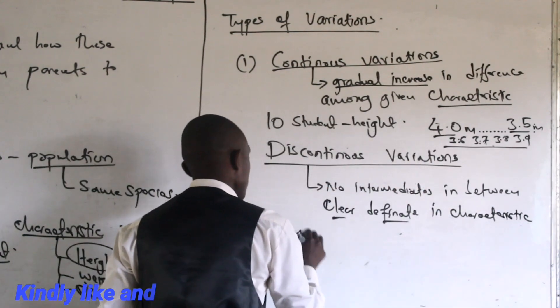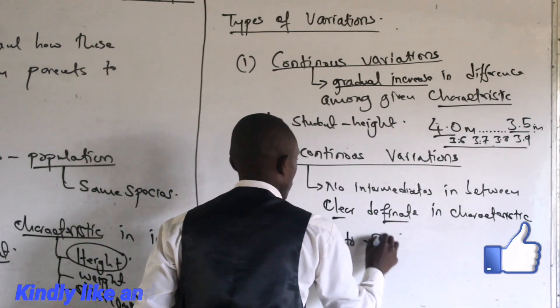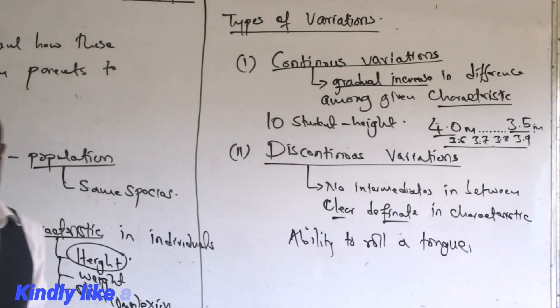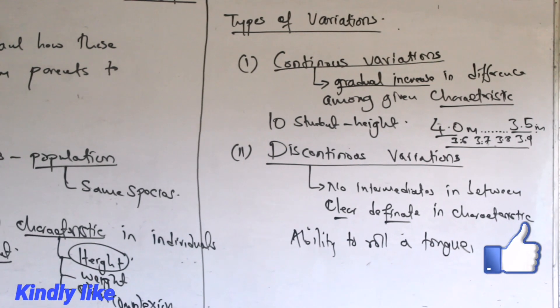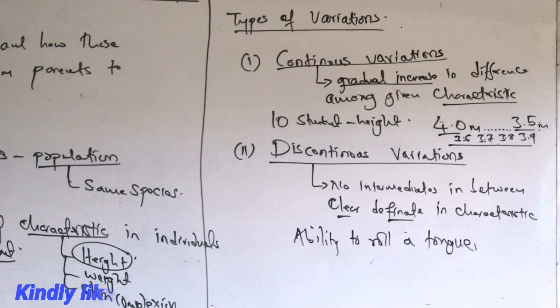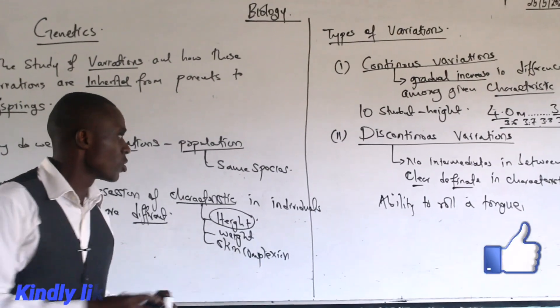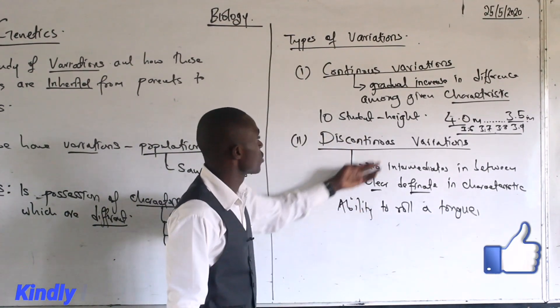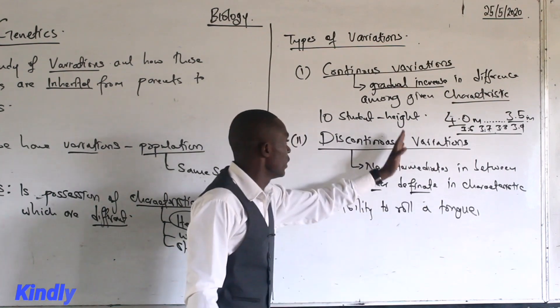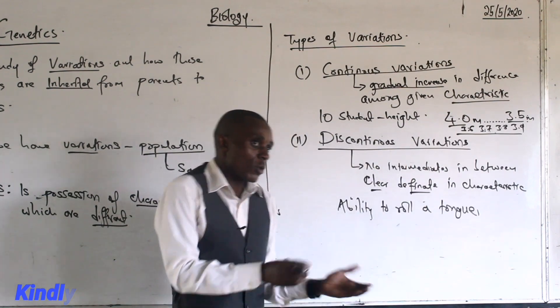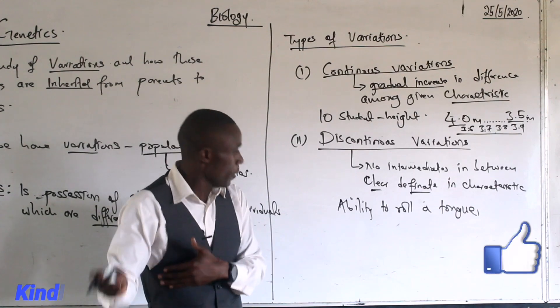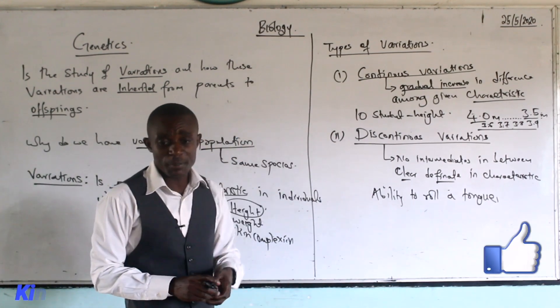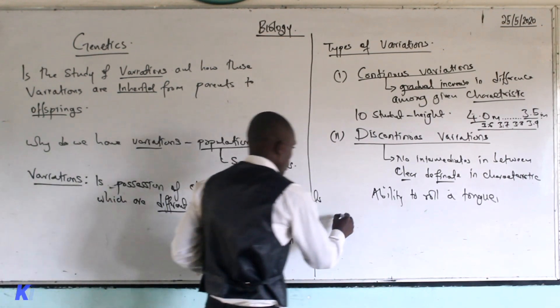I'll pick an example like ability to roll a tongue. If you want to roll a tongue, maybe you can realize that your father is able to roll a tongue, your mother can also roll a tongue, but maybe your siblings cannot. We realize that it's either you can roll your tongue or you cannot roll a tongue. This forms a good example of discontinuous variation because there's no intermediate - someone can roll it fully or cannot. That's an example of discontinuous variation.